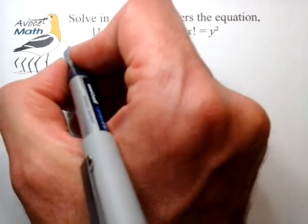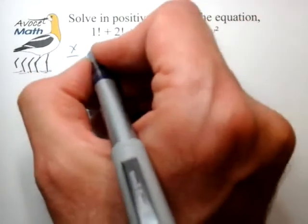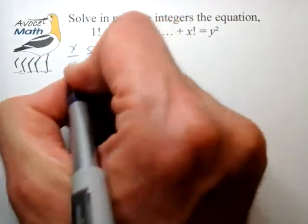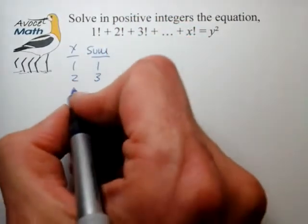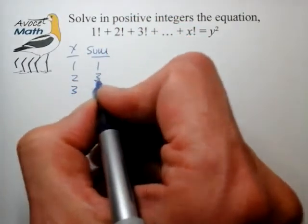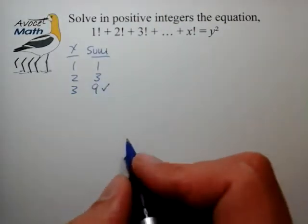So 1 the sum is 1, for 2 we have to add 2 factorial to 1 that's 3, 3 factorial we have to add 6 to 3 that's 9. So we have one of our first squares here.